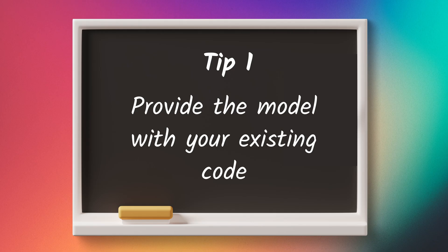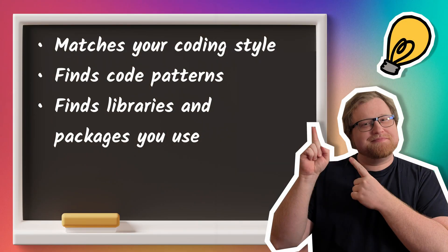My first tip is to provide the model with your existing code — and I don't just mean a snippet, I mean try to get the whole codebase in there. That really improves the performance of the code the LLM generates. It helps match your coding style, so it will know how to implement certain functionality — like all of your code patterns, how you do database access, what libraries are installed, and what packages you usually use. So when you ask the LLM to solve something that's already been done once or twice in your codebase, it's going to give you the correct result right away without re-prompting.